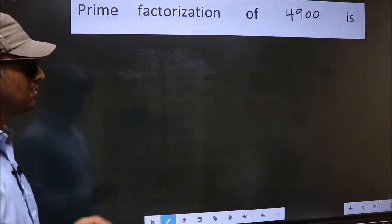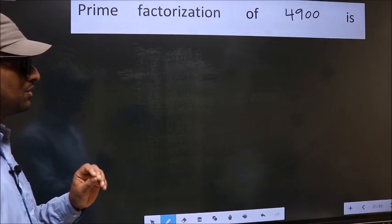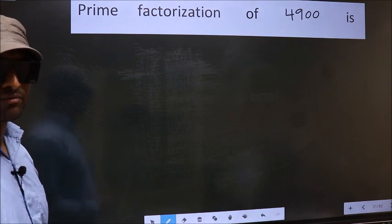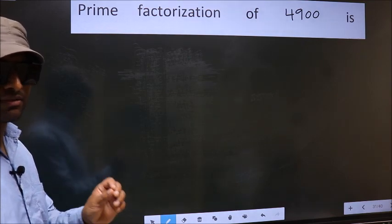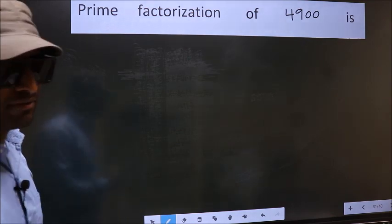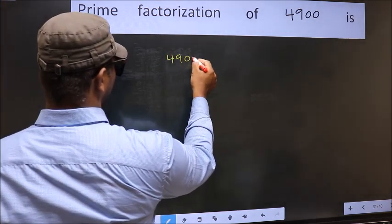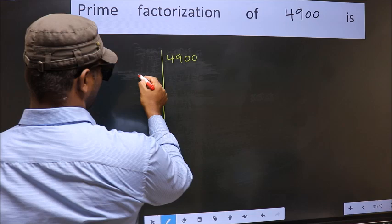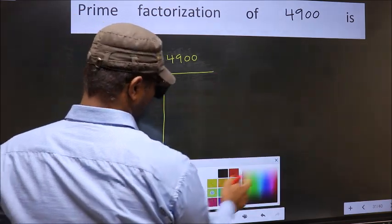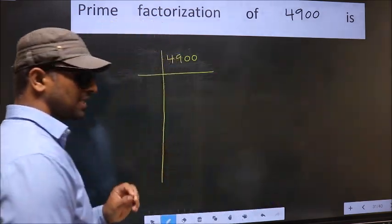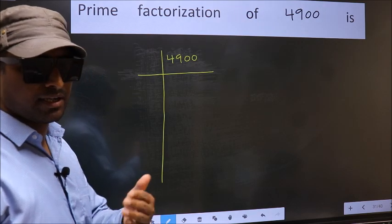Prime factorization of 4900. To do prime factorization, first we should frame it in this way: 4900. This is step 1. Next.